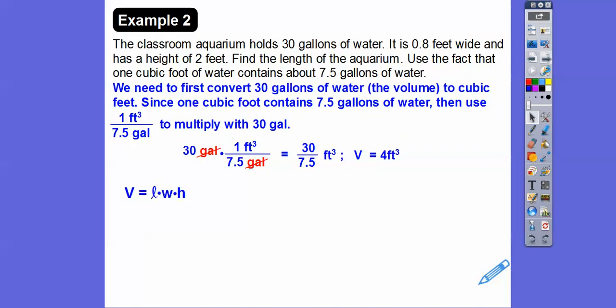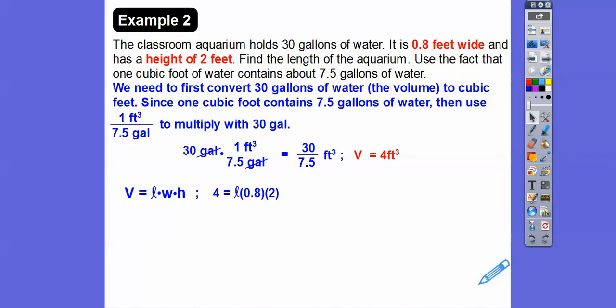Now we can use the formula: length times width times height. Plug in all the information that we need. And so 0.8 times 2 - well, 8 times 2 is 16, so 0.8 times 2 is 1.6. Then divide by 1.6 and we get 2.5. What's that mean? That means in feet, the length is going to be 2.5 feet long.